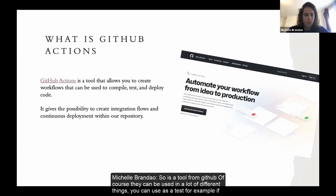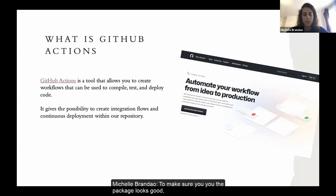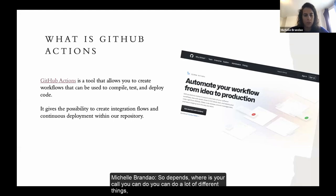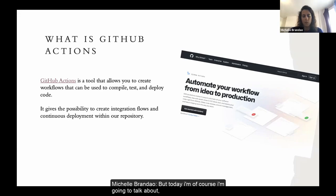GitHub Actions is a tool from GitHub that can be used for many different things. You can use it for testing — for example, if you've built a package and made small changes, you can use GitHub Actions to make sure the package still works. You can also deploy your project with GitHub Actions. Most people use it for continuous integration. You can use it with R, Python, and many different languages, but today I'll talk about it in R.